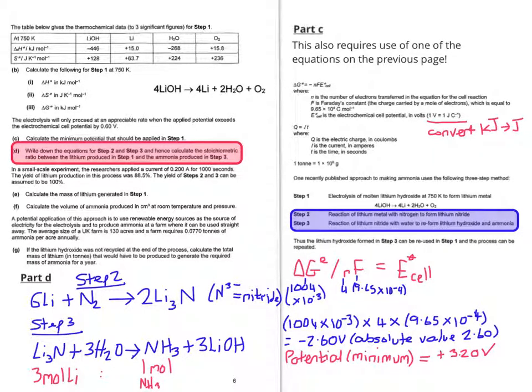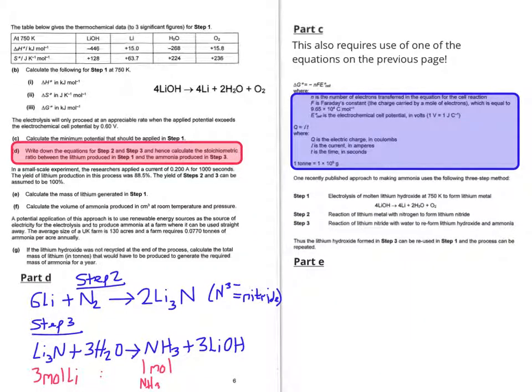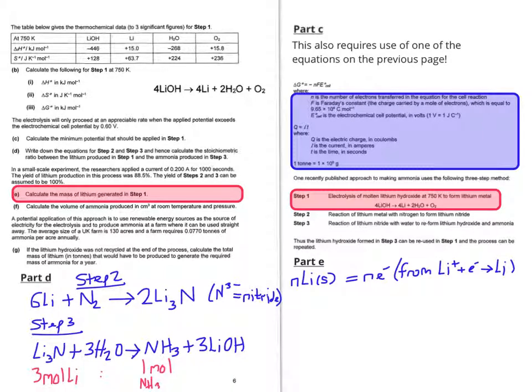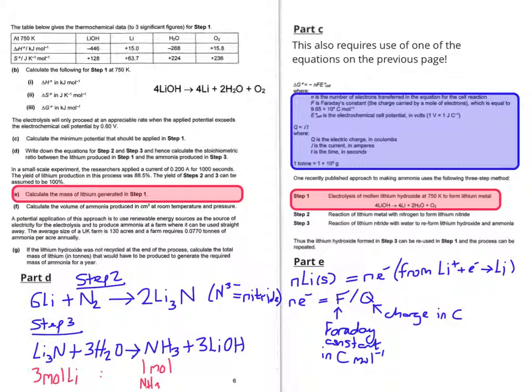So we can now move on to part E. So we're going to start needing to use the information in the blue box this time. So we want the mass of lithium generated in step 1. So going back to our previous equation, our reduction, we can see that the number of moles of lithium is equal to the number of moles of electrons. So we need to use the Faraday constant to work out the number of moles of electrons. So the Faraday constant, the unit is coulombs per mole, and Q is the charge in coulombs. So dividing one by the other will give us the number of moles of electrons that have been generated and therefore from that we can work out the number of moles of lithium and then the mass of the lithium needed.